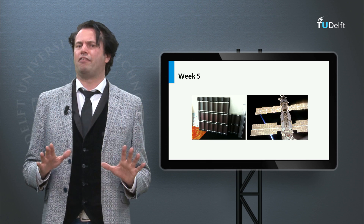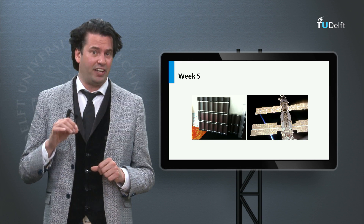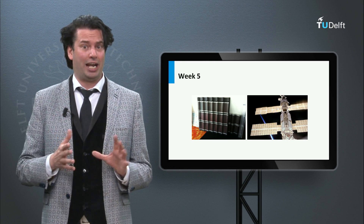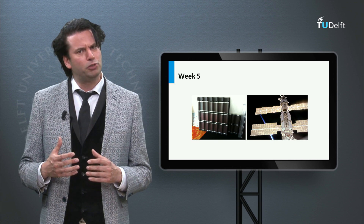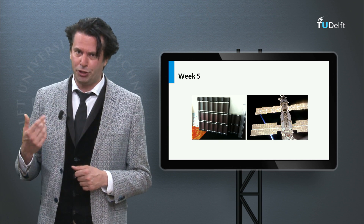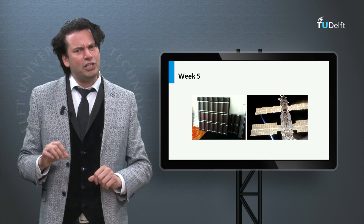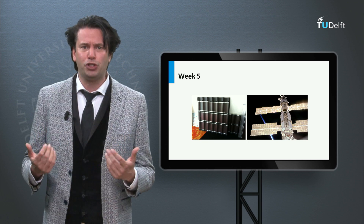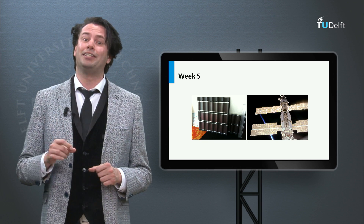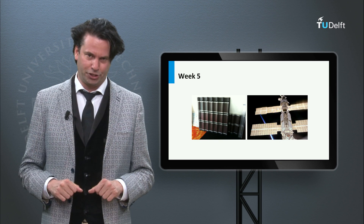In week 5 we will discuss the other PV technologies based on thin films. Thin film PV technology uses less materials and is produced by cheaper processing methods to further reduce the cost price of solar energy. In addition, we discuss the concentrator multi-junction solar cells, which have up to date the highest conversion efficiencies among all PV technologies.